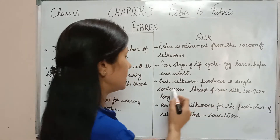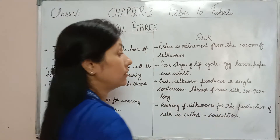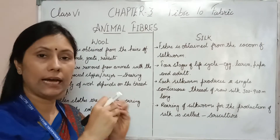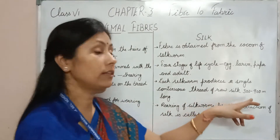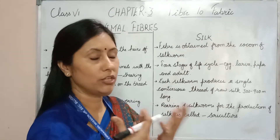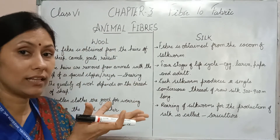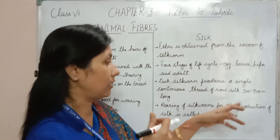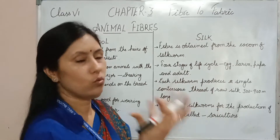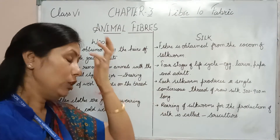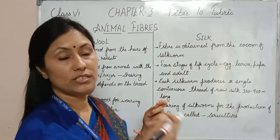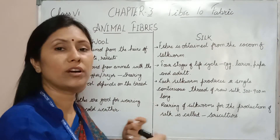Each cocoon produces a single continuous thread of raw silk that is 300 to 900 meters long. If we remove the cocoon from the silkworm, we extract the fiber from it. However, if the adult has already developed and matured, the cocoon is broken. The cocoon is softened in water so that the continuous silk fiber thread can be unwound.